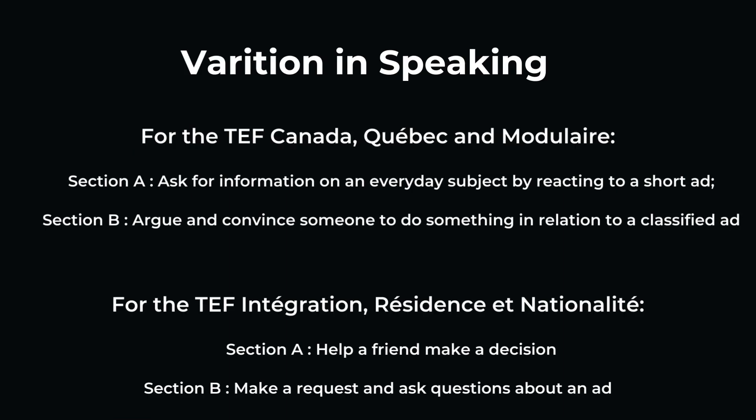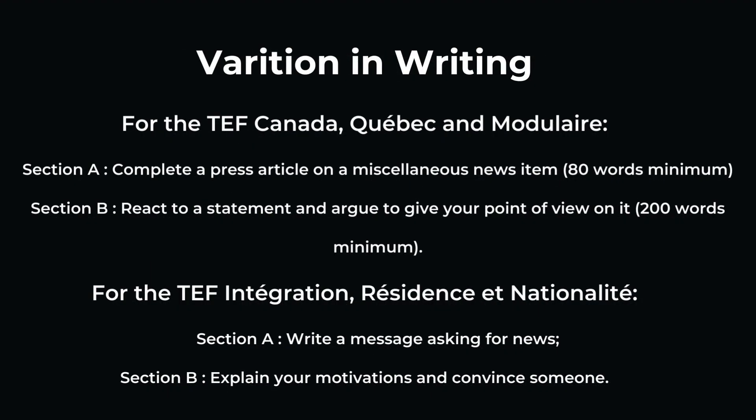There is some variation in the speaking exam. For TEF Canada, Quebec, and Modulaire, there are two sections: Section A, where you have to ask for information by reacting to a short advertisement, and Section B, where you have to convince someone to do something after seeing an advertisement. For TEF Integration, Residence, and Nationality, Section A asks you to help a friend make a decision, and Section B requires you to make a request and ask questions about an advertisement.